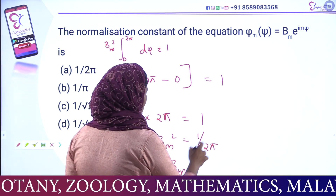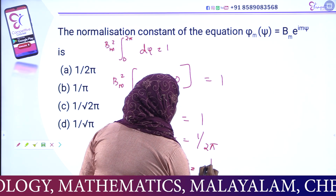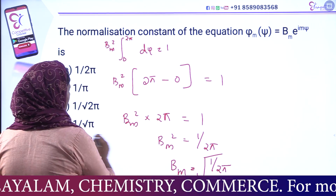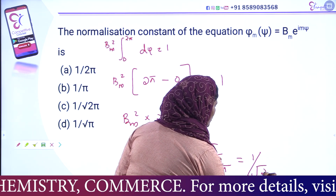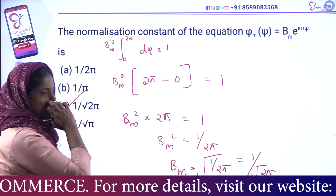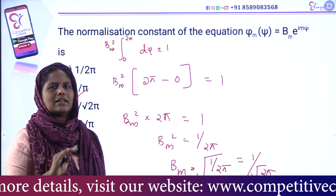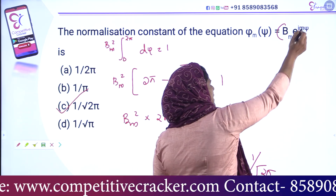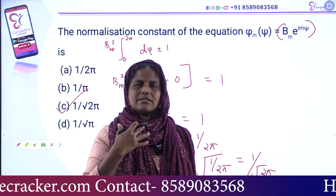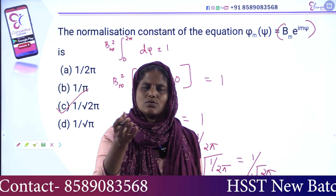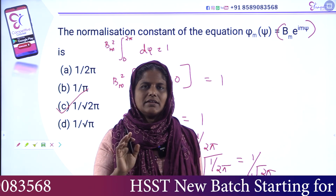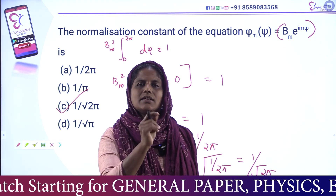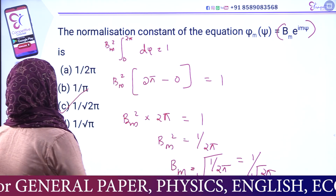Therefore Bm² equals 1/2π, so Bm equals root of 1/2π. The normalization constant is equal to 1 by root 2π. We multiplied the wave function by its complex conjugate and integrated from 0 to 2π to get this result. The final answer is 1/√(2π).